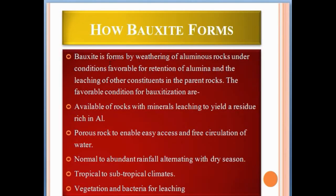Bauxite forms by weathering of aluminum-bearing rocks under conditions favorable for retention of alumina and the leaching of other constituents in the parent rocks. The favorable conditions for bauxite formation are: availability of rocks with minerals that leach to yield a residue rich in aluminum, porous rock to enable easy access and free circulation of water, normal to abundant rainfall alternating with a dry season, tropical to subtropical climates, and vegetation and bacteria for leaching.